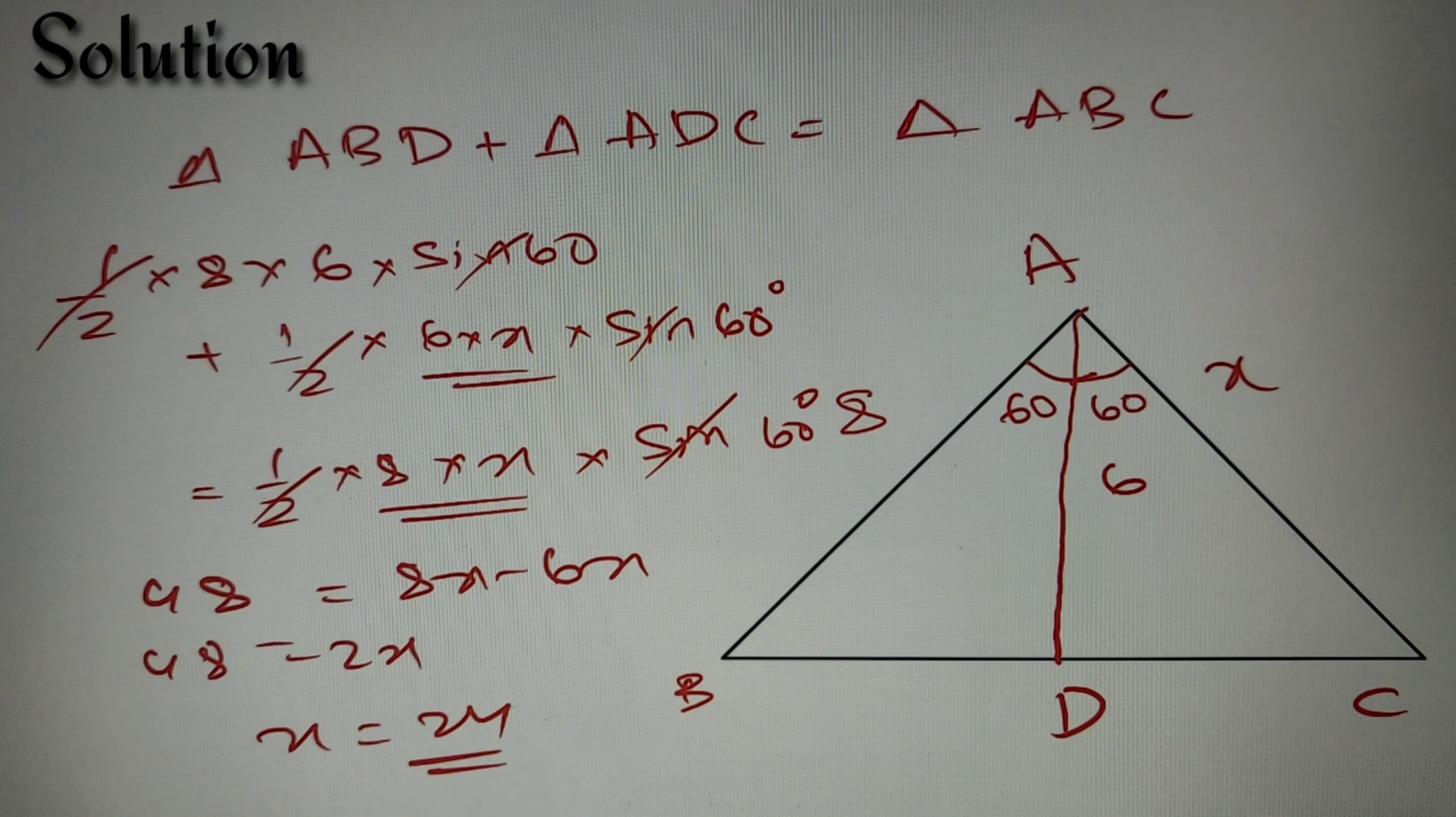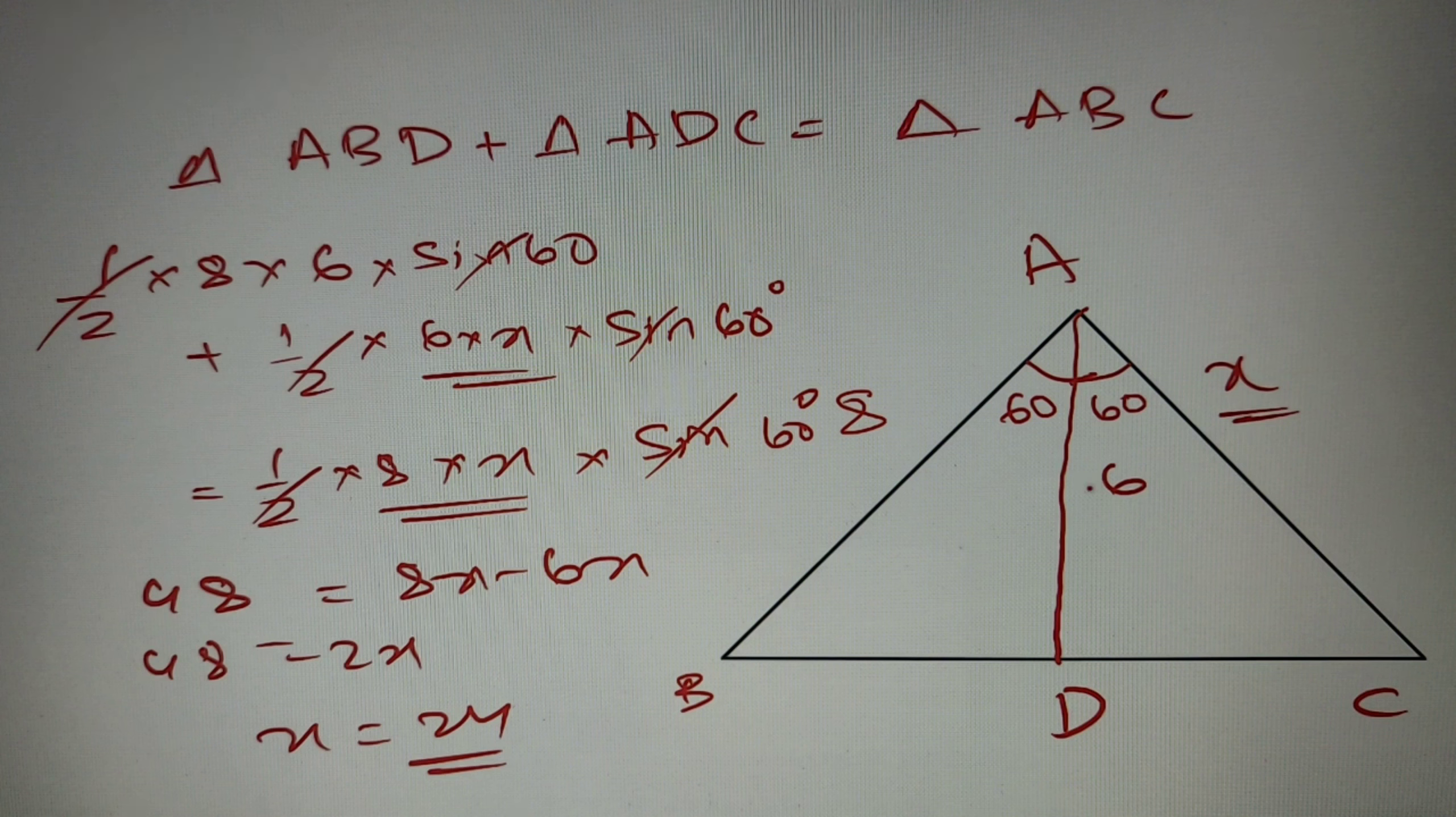So we have got that the length of AC is equal to 24, and according to our given question it is option number A. So the final answer is option number A, 24.